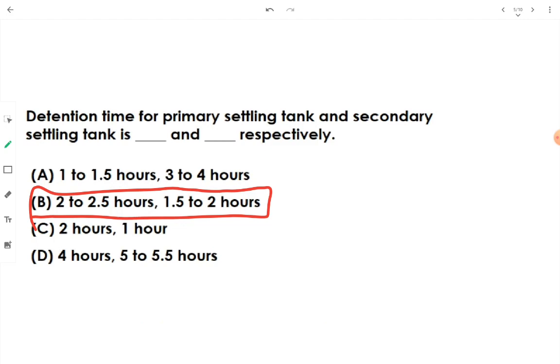In case if industrial waste is there, then we can have more detention time. The option which is providing as PST has 2 to 2.5 hours and SST has 1.5 to 2 hours, it is the optimized detention time. But, in case if we need, if the wastewater incoming is industrial, is having industrial waste in it, then we can prefer the more detention time in that.